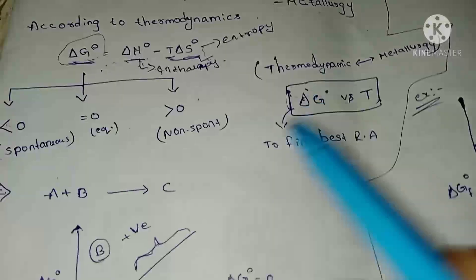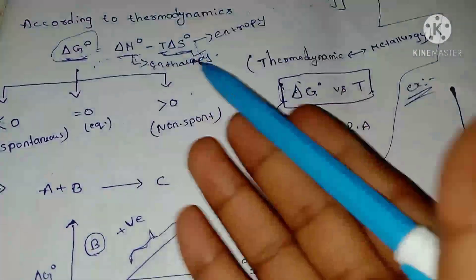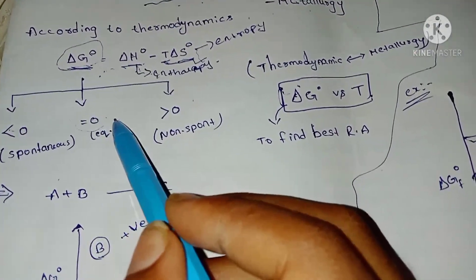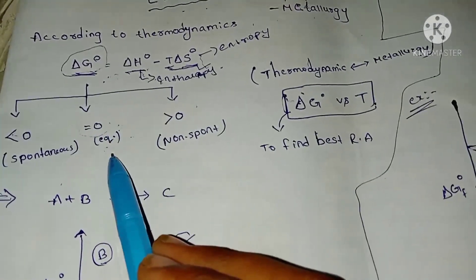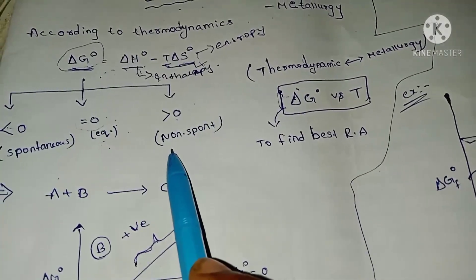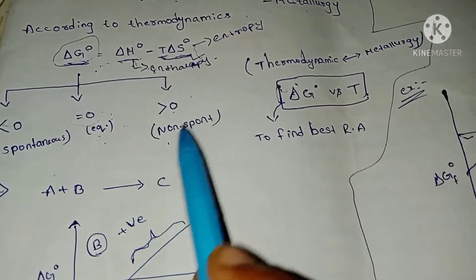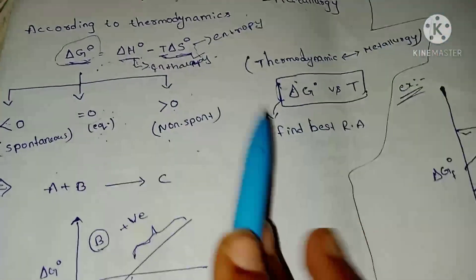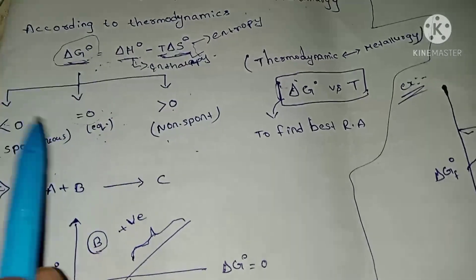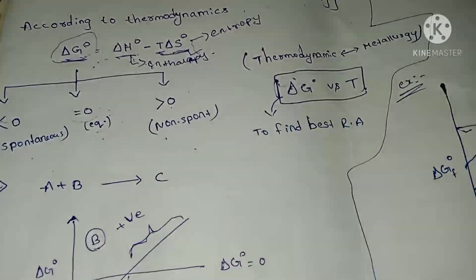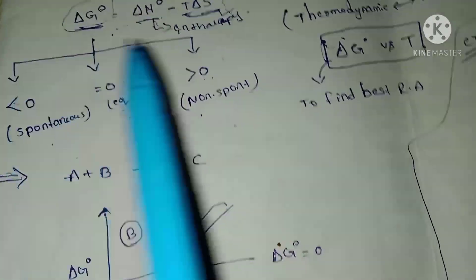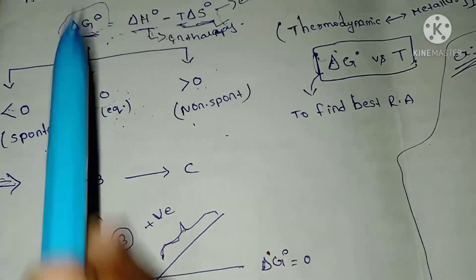This tells us what is happening in the chemical reaction. If Delta G⁰ is equal to zero, the reaction is in equilibrium condition. If Delta G⁰ is greater than zero, the reaction is non-spontaneous. If Delta G⁰ is less than zero, the reaction is possible and spontaneous. We can use the Delta G⁰ value to determine if a reaction is feasible or non-feasible.